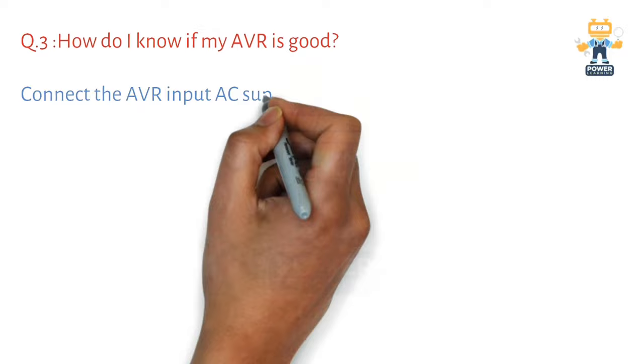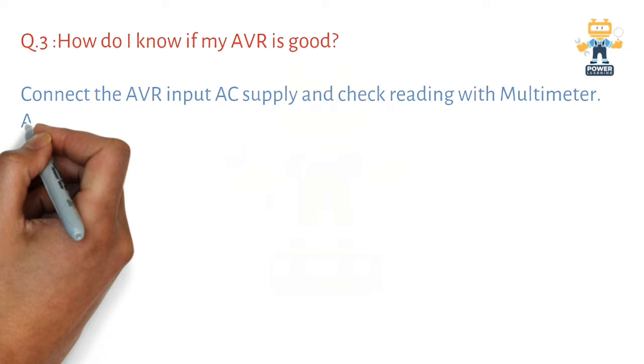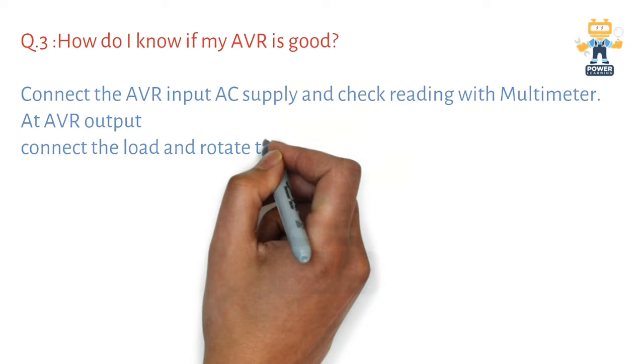Now we will see question number three: How do I know if my AVR is good? Connect the AVR input AC supply and check the reading with a multimeter at the AVR output. Connect the load and rotate the multimeter knob to DC.